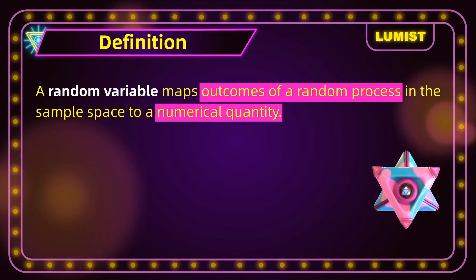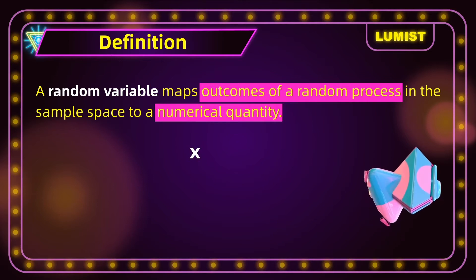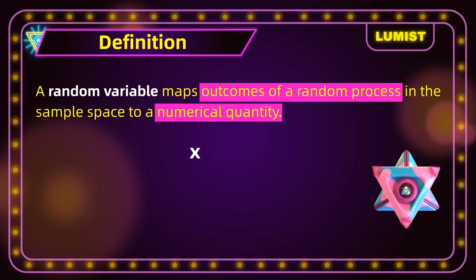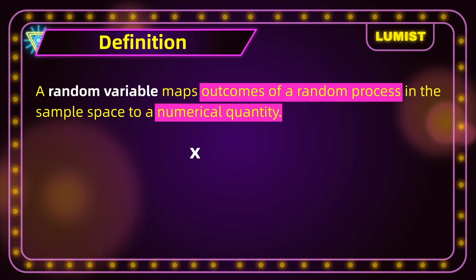What we mean by this is, say we have a random variable x representing some random process. What this definition is saying is that this random variable x representing some random process maps the random process in the sample space to a numerical quantity. So this here is the numerical quantity.